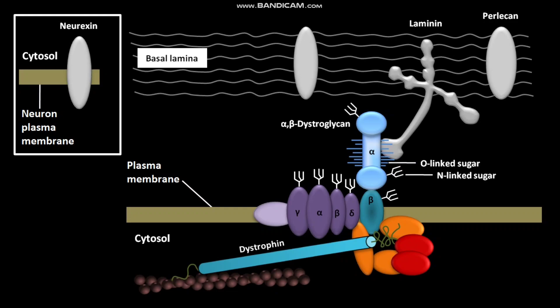The protein dystrophin is defective in Duchenne muscular dystrophy. Dystrophin links beta-dystroglycan to the actin cytoskeleton, and alpha-dystroglycan links dystrophin to the sarcoglycan or sarcospan sub-complex.